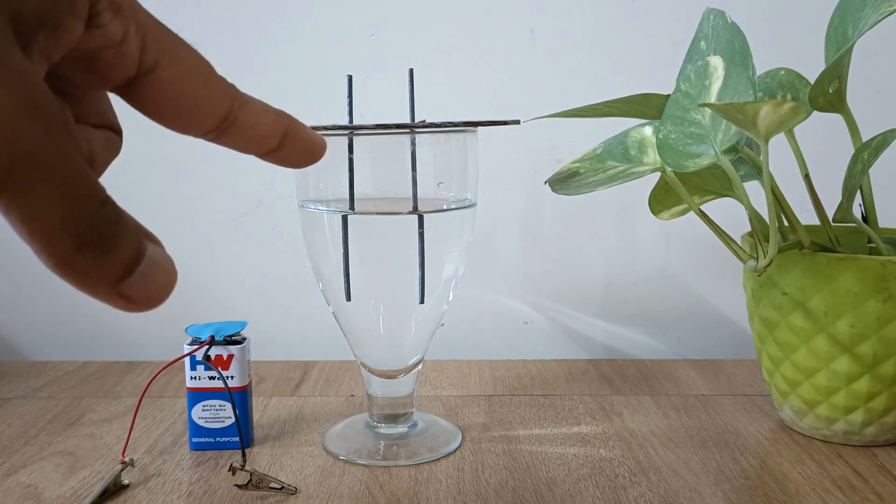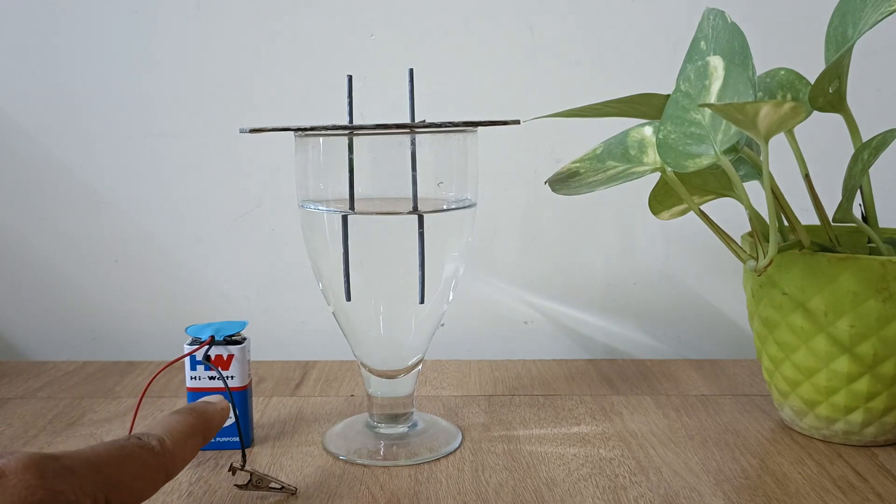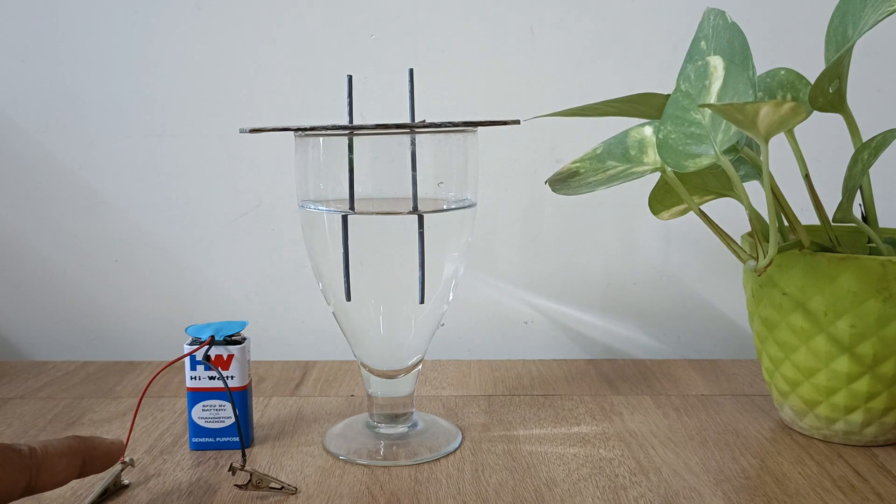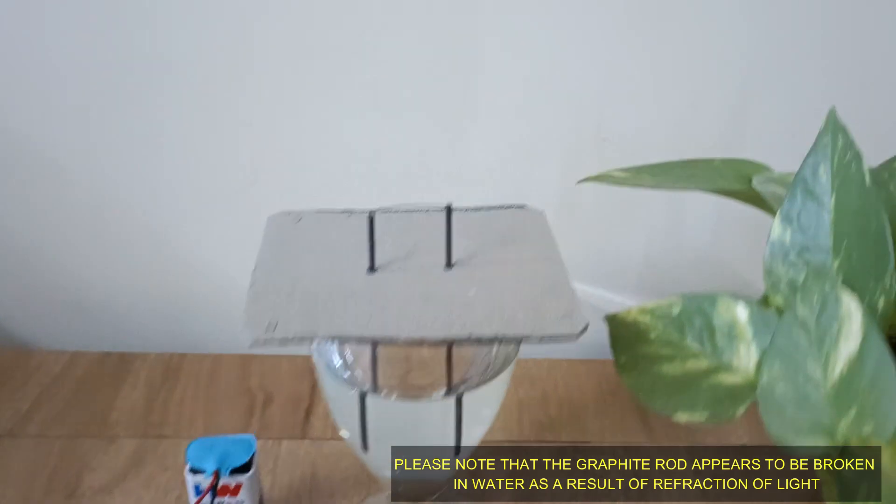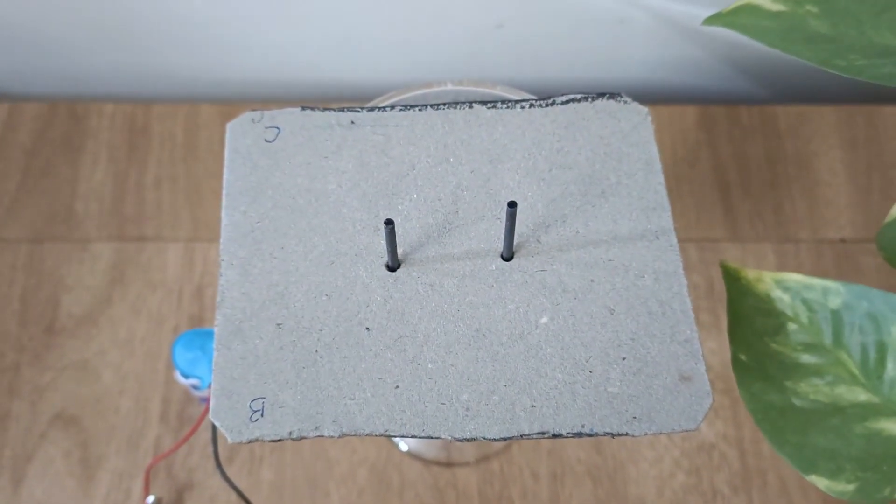Here there are two graphite electrodes. This is a 9 volt battery. The black wire corresponds to the negative terminal and the red wire corresponds to the positive terminal of the battery. This is a small piece of cardboard on which two holes are made such that both electrodes can pass through them easily.